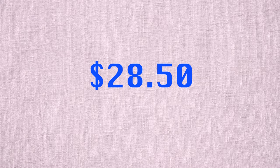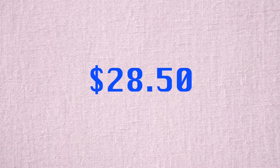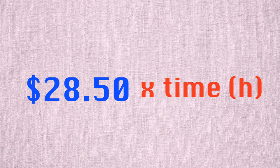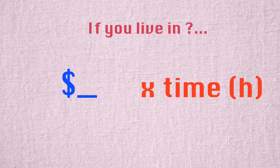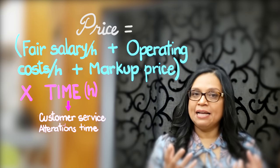I have this special number — 2850 — that I multiply by the time the job takes. This gives me the minimum price. It's a pretty standard reference in Canadian dollars here in Ontario. Later on I'll show you how to calculate yours, but now let's talk about time in the formula.